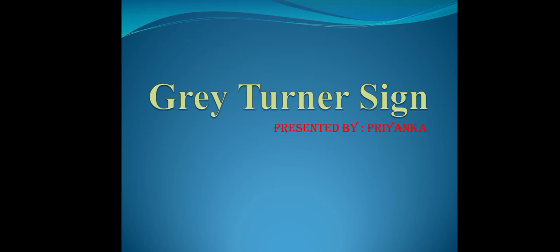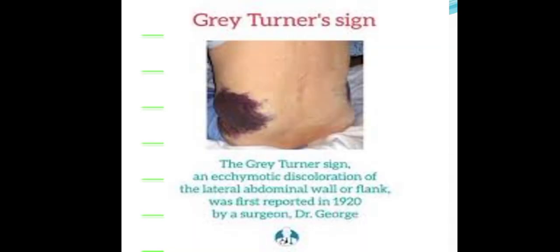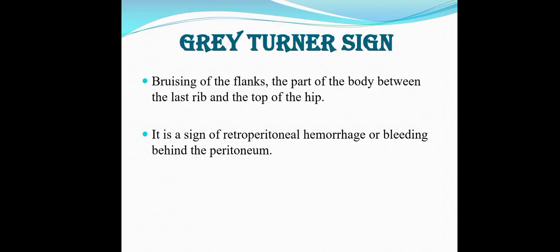Hello friends, so in today's lecture I am going to discuss with you the Grey Turner sign. The Grey Turner sign is an ecchymotic discoloration of the lateral abdominal wall or flank, first reported in 1920 by a surgeon named Dr. George Grey Turner. The Grey Turner sign is mainly bruising of the flanks.